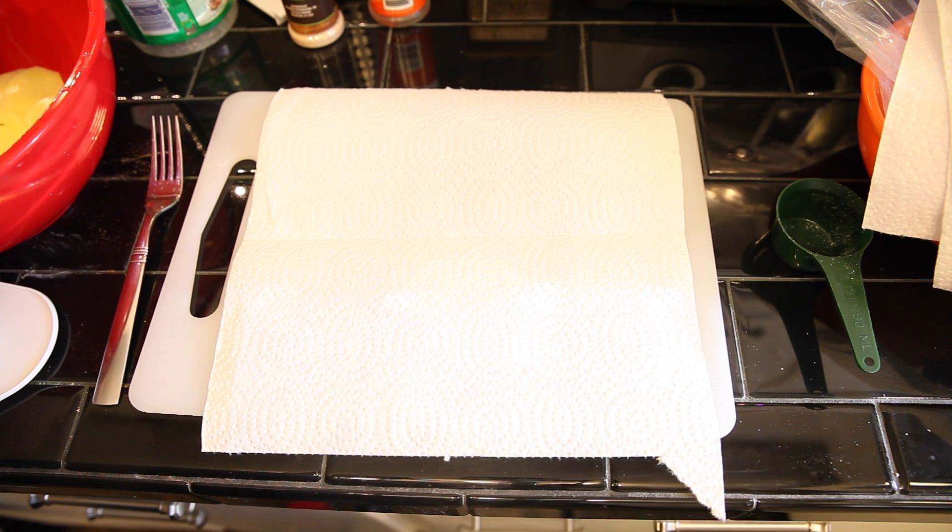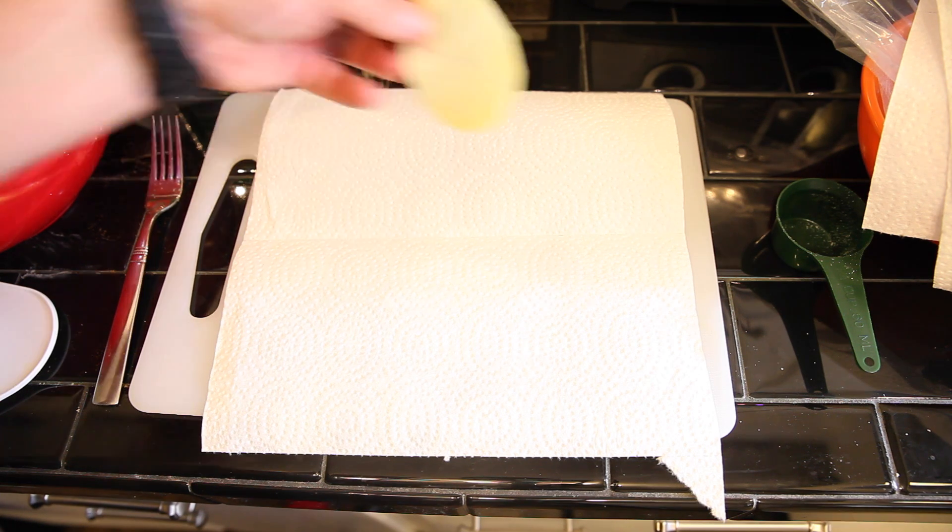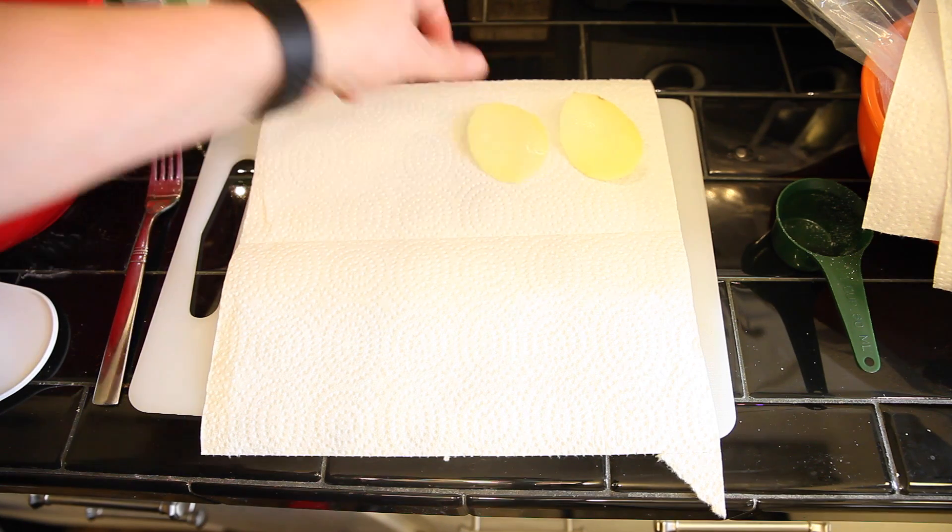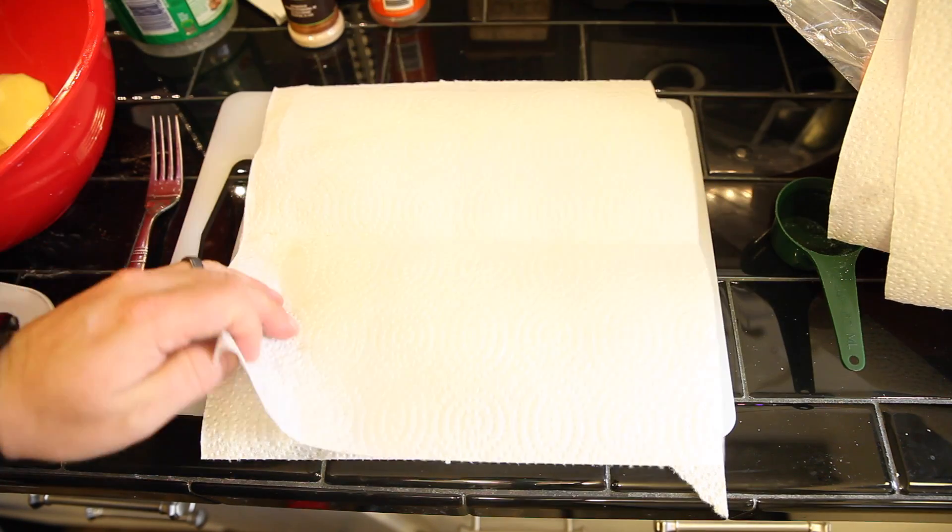Once the potatoes have soaked for 10 minutes drain the bowl and then place them onto a paper towel to dry. Then cover them with a paper towel to dry the top.